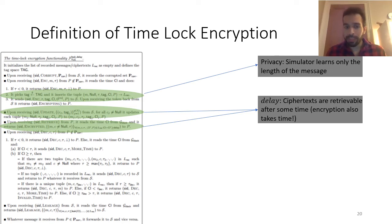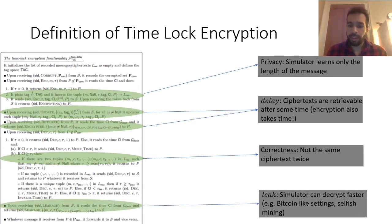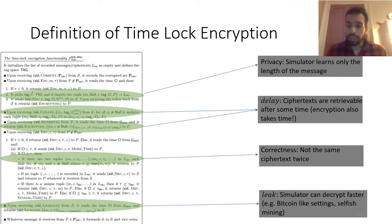Next is correctness: if a ciphertext is obtained twice, the functionality returns an error message, as in the case of classical public key encryption. Finally, we have our leak function, where the simulator possesses an advantage in decryption time over honest parties, like the Bitcoin construction I referred to. Ideally, the leak function should equal the identity, meaning the simulator does not possess any advantage in comparison with the other parties when using certain encryption schemes.